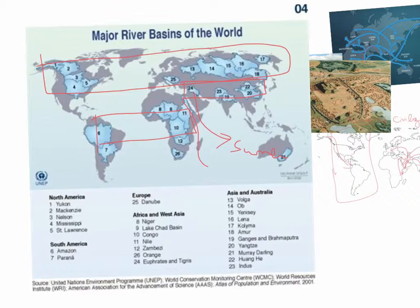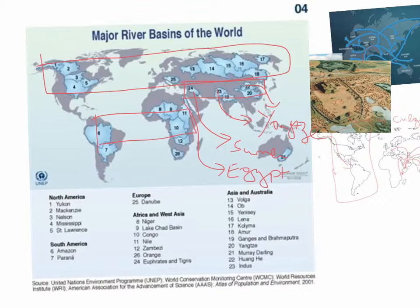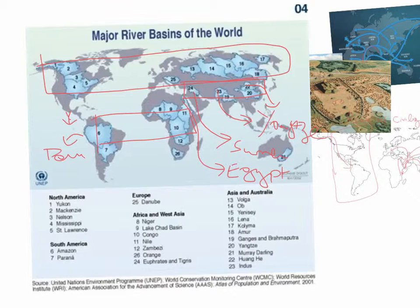Then we have the Indus river where the Indus River Valley civilization began, and then the Yangtze river that began the civilization of China. Besides these, there are also two other independent places considered to be cradles of civilization: one is the Coatzacoalcos river basin in Mexico, and another in the Norte Chico region in Peru. Both of these were significantly smaller than the four civilizations described earlier, due to significant geographic challenges.